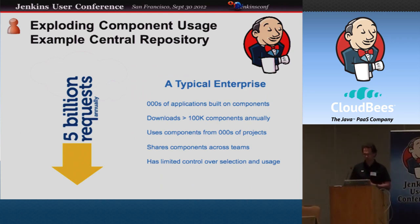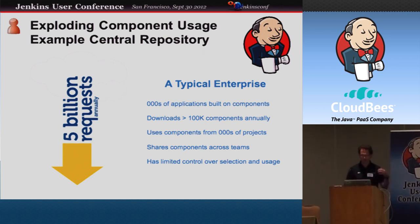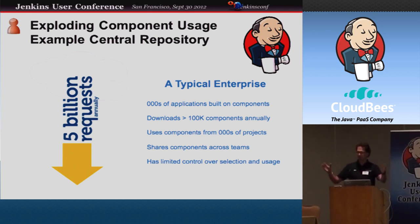We see that component usage exploding. Sonatype is running what's called the central repository, which is the built-in repository when you do a Maven build where everything gets downloaded from — and also Gradle, SPT, and all other tools are downloading stuff from. We see five billion requests every year of components. The typical enterprise application has hundreds, and they are used across applications. When you build an application like that, you're using all these components from the open source world, but you're also creating your own components and sharing them across your teams.